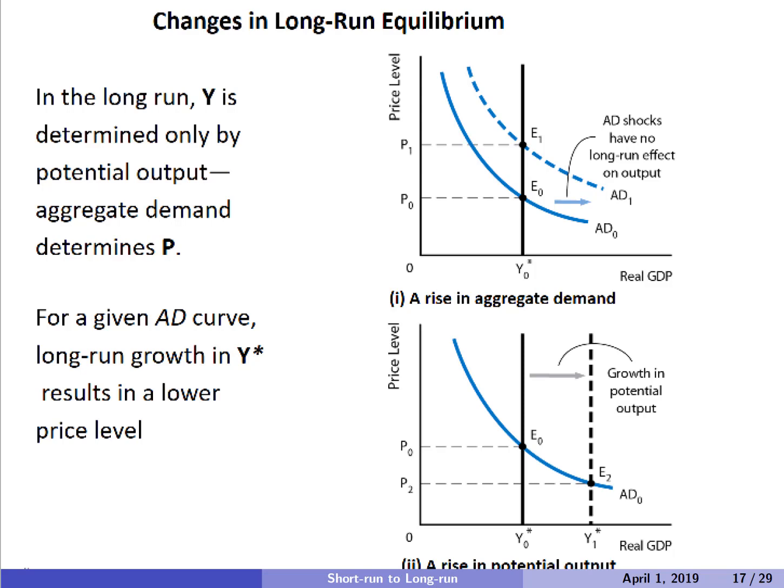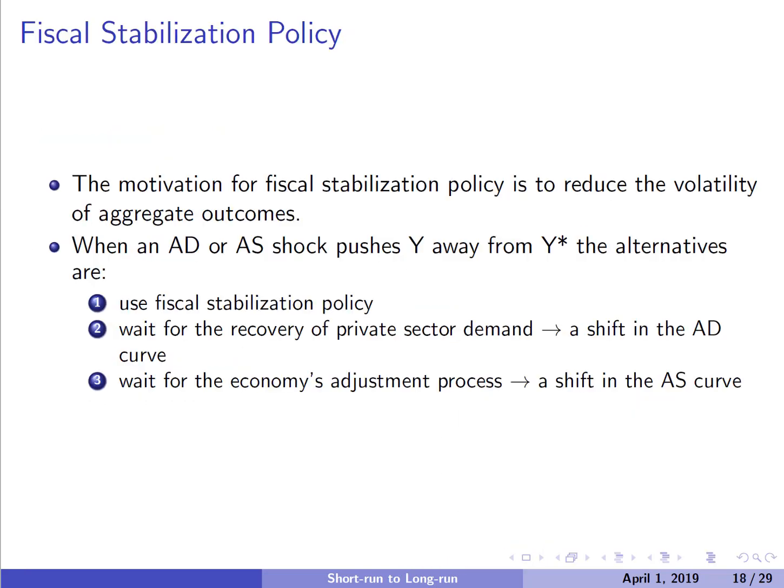When we have expansionary or contractionary AD shocks, the economy can be really slow to react in the short run. What we might want to do is have some kind of fiscal stabilization policy, which tries to reduce how much volatility we see in our economy.